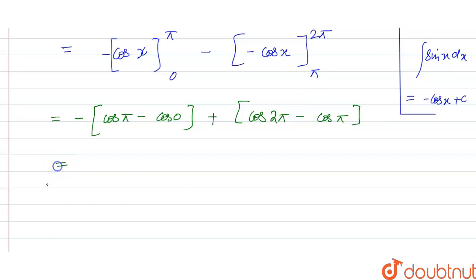So if we evaluate this, cos π is equal to minus 1 and minus cos 0 is equal to 1, and we have minus here, and plus of cos 2π is equal to plus 1, and minus cos π is equal to minus 1.